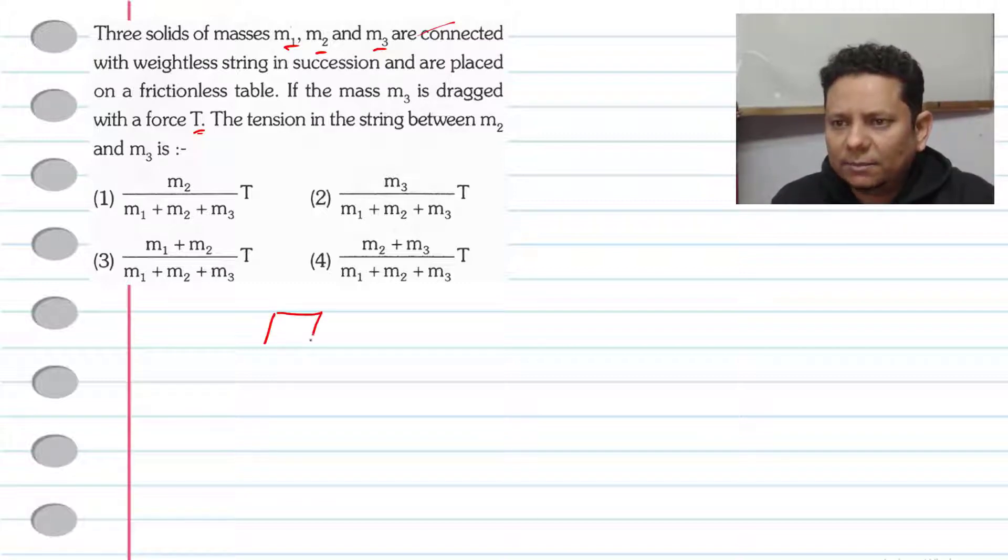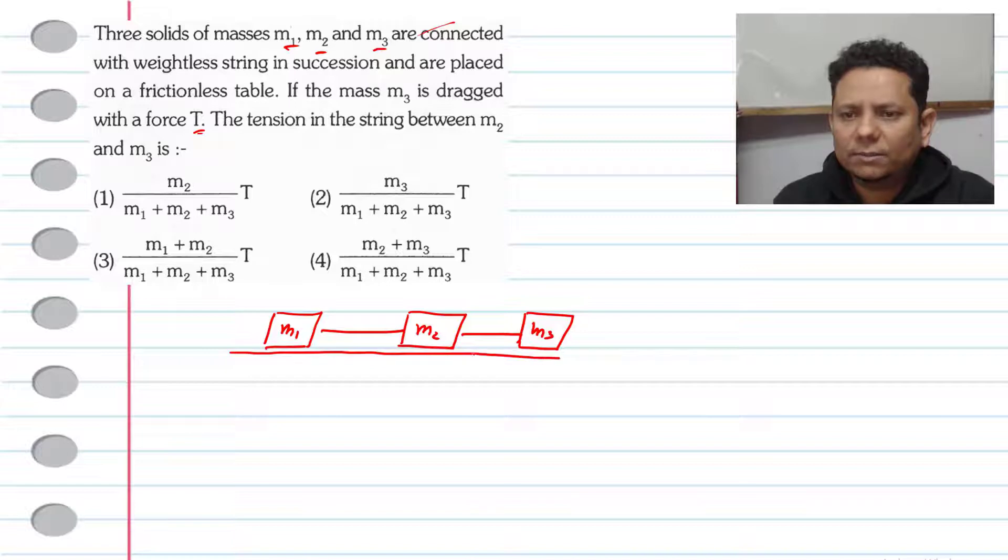So, this is your scenario. This is your mass M1, this is your mass M2, and this is your mass M3. This is your succession, horizontal frictionless table. Here we have mass M3 with a force, which we have given T.